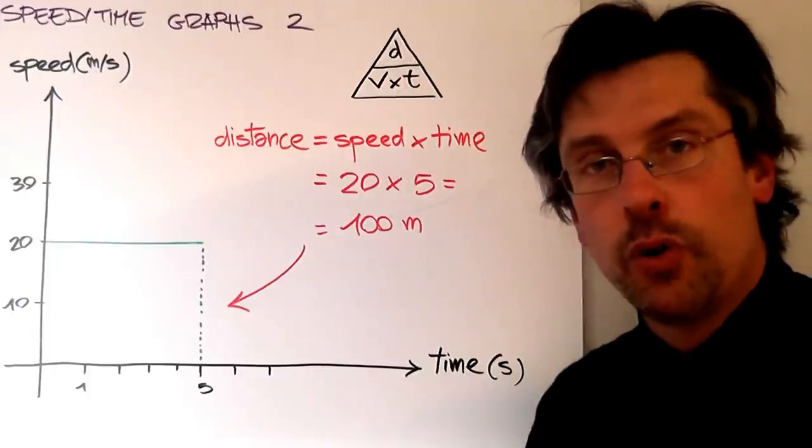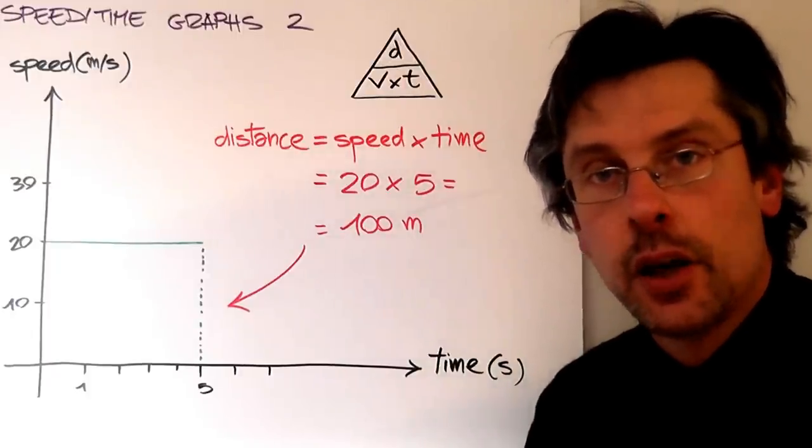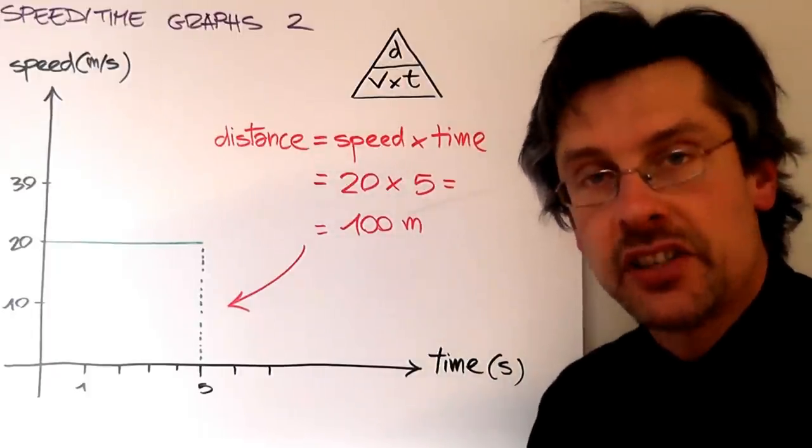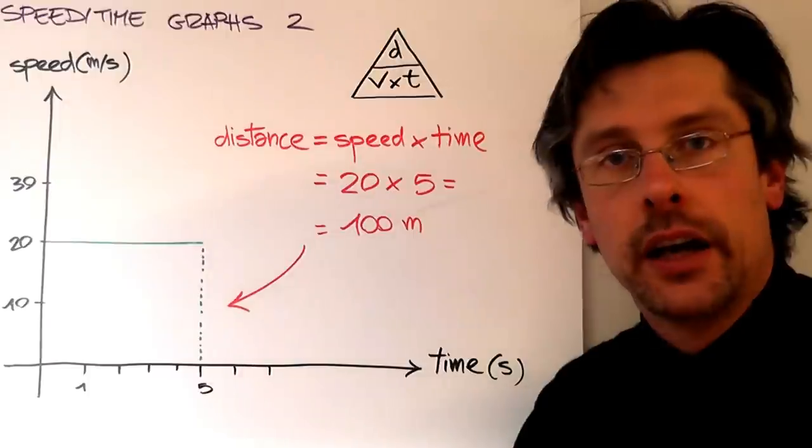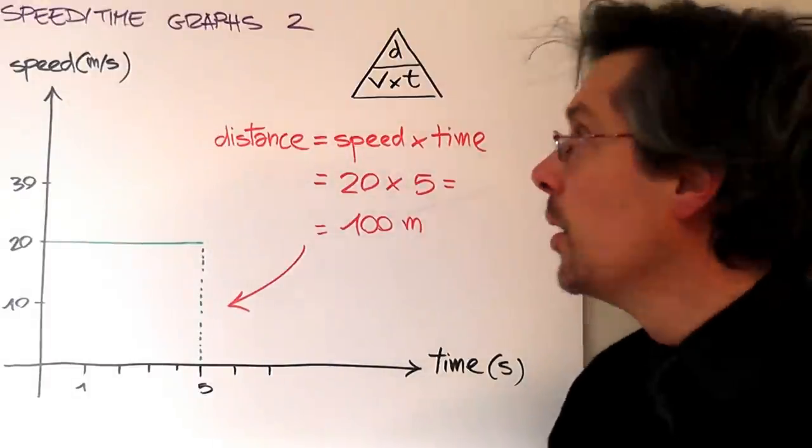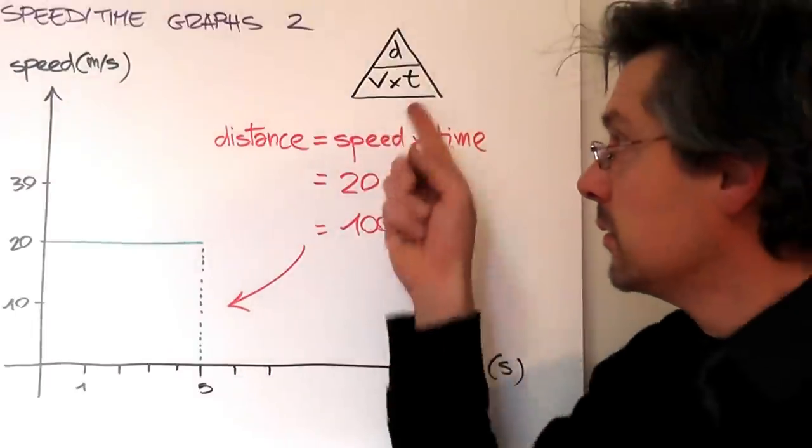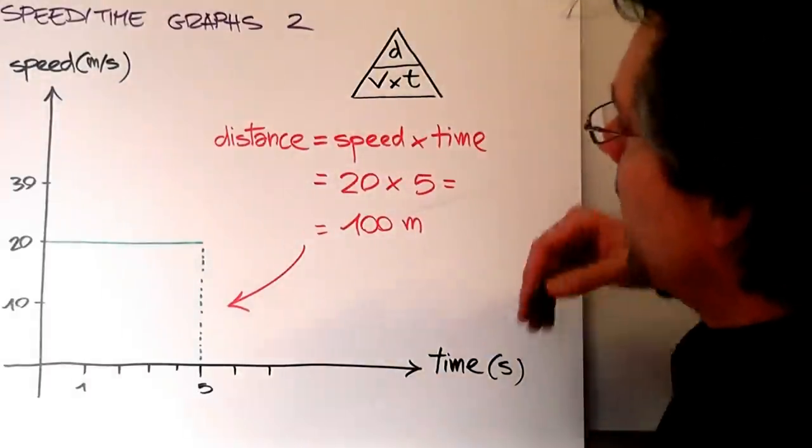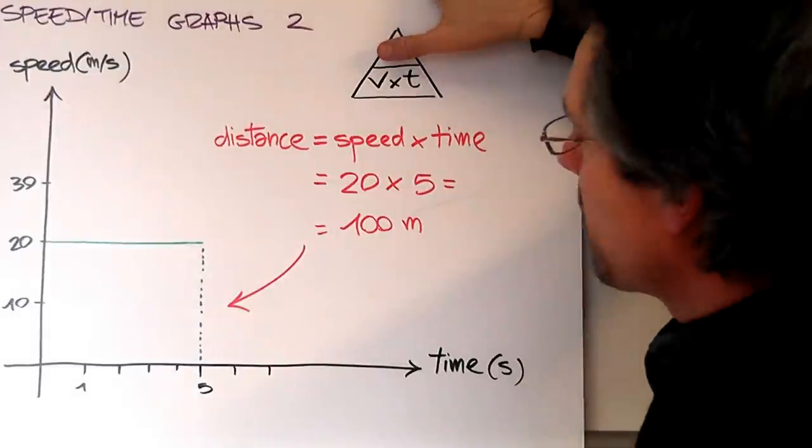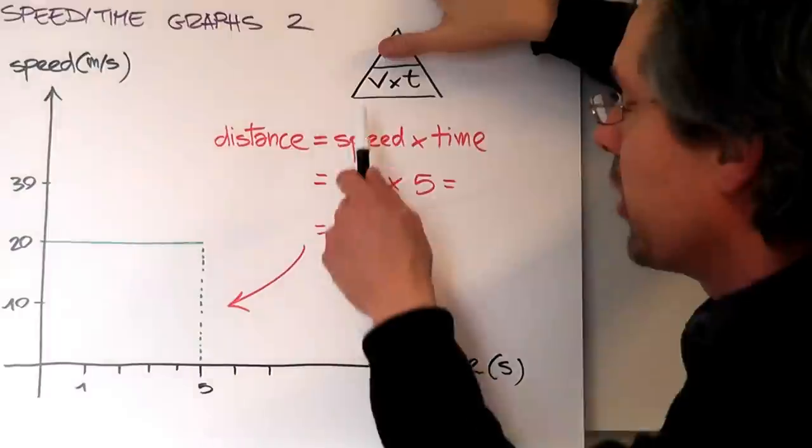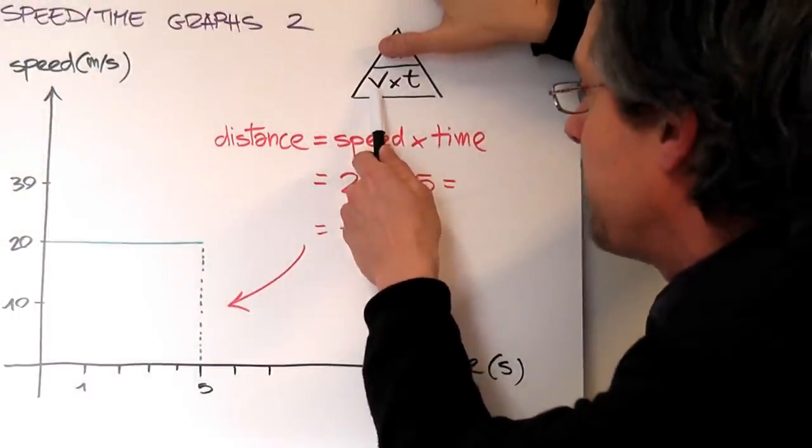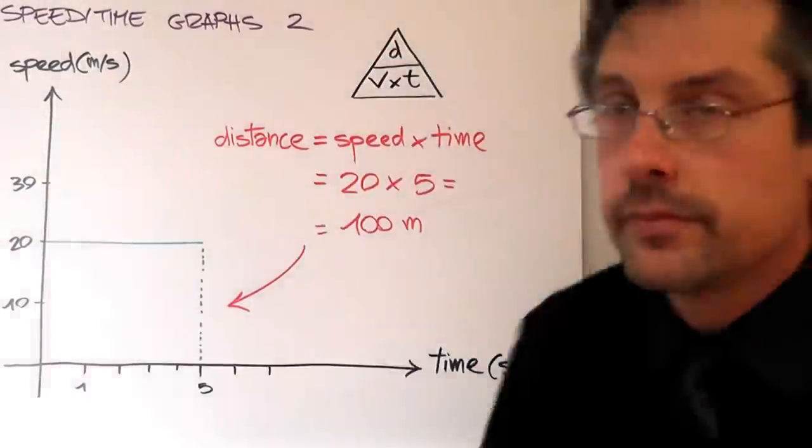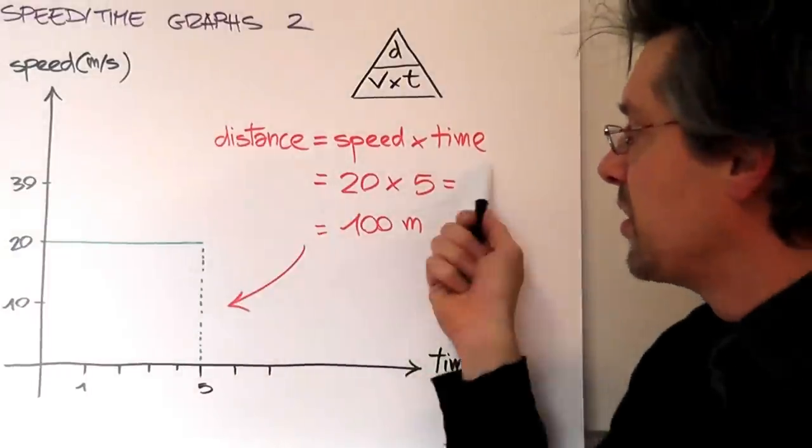Now when an object is moving at a constant speed, we can also find the distance traveled, and we can do it by using again our magic triangle. So using a formula, let's see it. We want to find the distance, so I'm going to color the distance. And there you go. Distance is given by speed times the time.